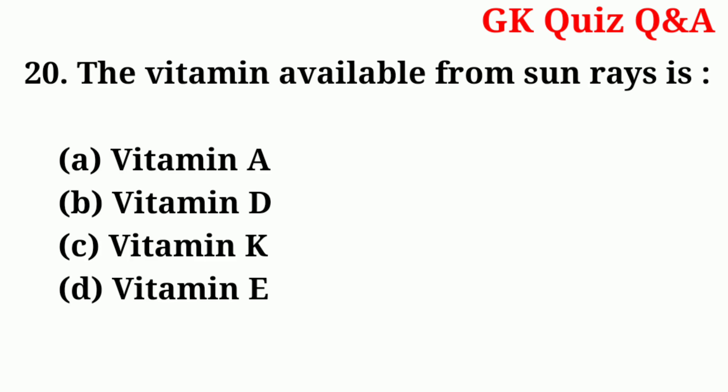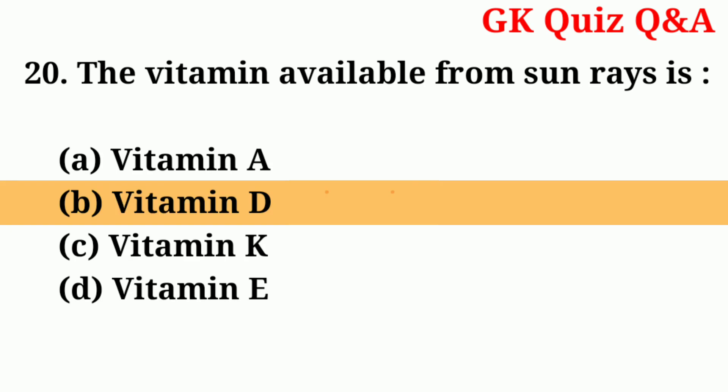Number twenty: the vitamin available from sun rays is — answer: number B — vitamin D.